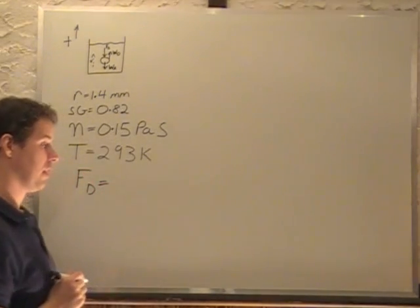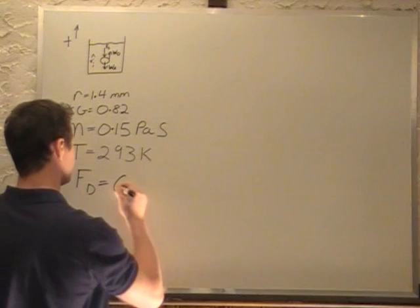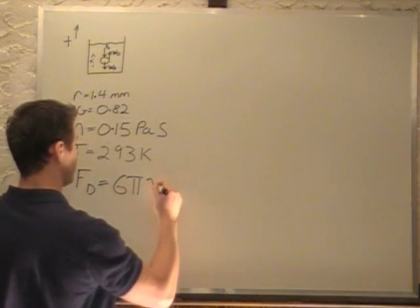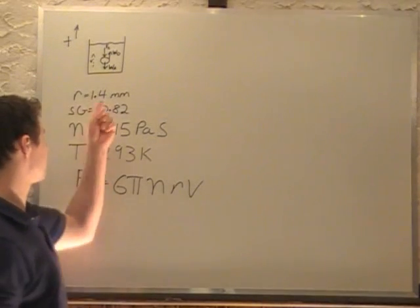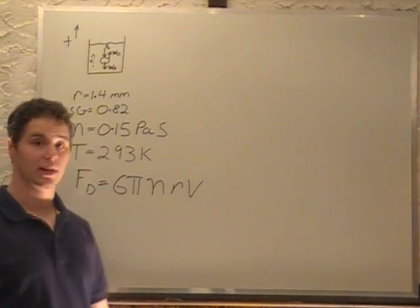The drag force formula that we have is drag force equals 6πηrv, where η is our viscosity, r is the radius, and v is our velocity that we're looking for.